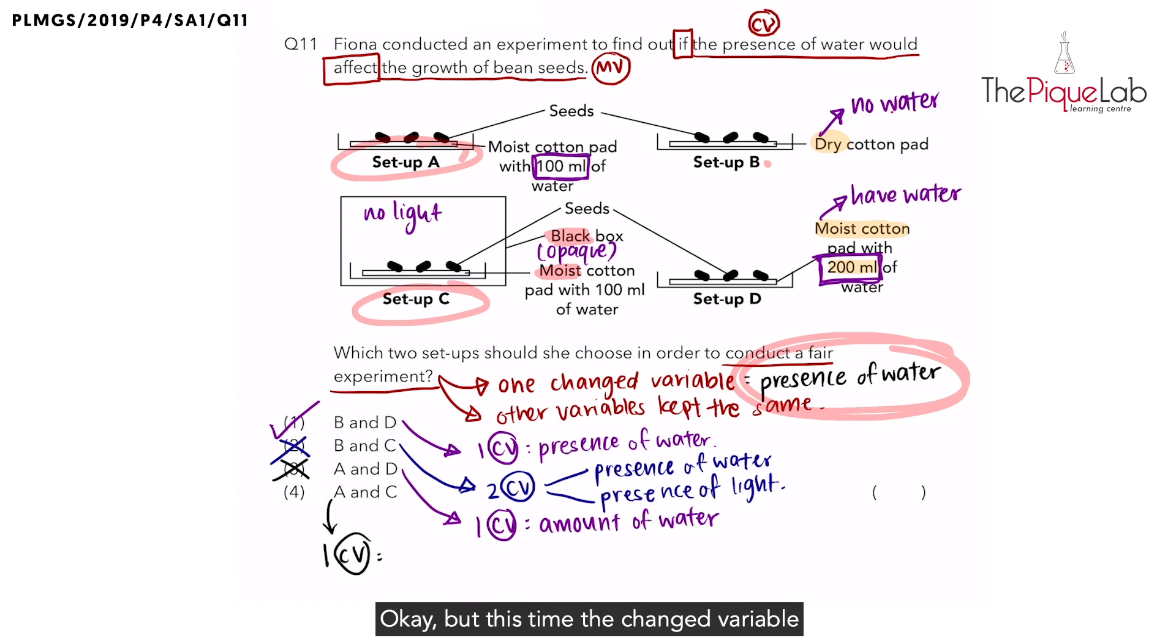But this time the change variable is the presence of light, which is not what we're looking for as well. We're looking for the change variable which is the presence of water. So the last one is wrong. That means the only possible answer would be number one.